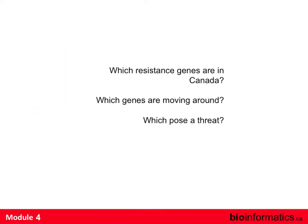You could ask which resistance genes are in Canada, which genes are moving around, and which ones pose a threat — that's a different question from asking what kind of resistance we see in Canada, which is a phenotypic question. We have good numbers on rates of beta-lactams or aminoglycosides not working. We often are missing the data on what's causing it, because there could be 30 or 40 different genes causing aminoglycoside resistance. Now with sequencing we can start to fill in that gap.